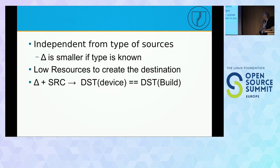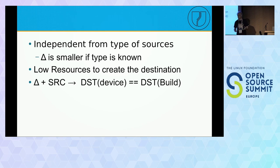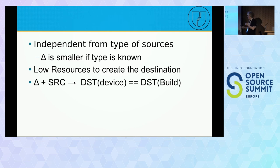Starting from this, I wanted to find a delta approach independent from the type of source — because we update not just software but also manuals, videos, and everything on the device. For embedded devices we cannot use a lot of resources or memory just to apply a delta. What was important to me is that after applying the delta, the result should be identical to what was built on the build system — running the hash on the device should produce the same result as BitBake.